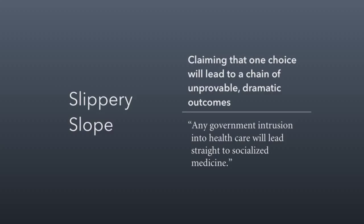Slippery slope is where you claim that one choice will lead to a chain of unprovable, dramatic outcomes. You heard this a lot during debates over the Affordable Care Act — the idea that any government intrusion into healthcare will lead straight to socialized medicine. That's a classic slippery slope argument. There are actually a lot of intervening events that would have to occur before we got to socialized medicine, and that first step is not sufficient to carry out all those other steps.